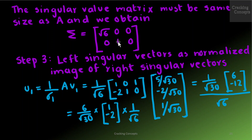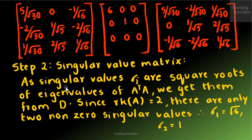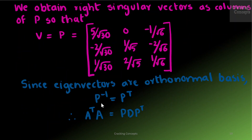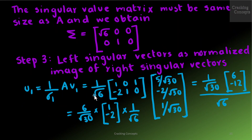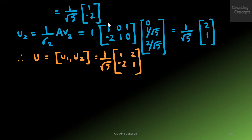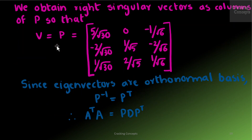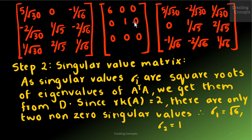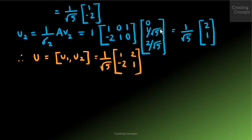In step 3 we find the left singular vectors as the normalized images of the right singular vectors. We compute Ui = A Vi / σi. So U1 = A V1 / σ1, where V1 is the first column of V. On substituting the values we get U1 = (1/√5)[1, −2]. Similarly U2 = A V2 / σ2, where V2 is the second column of V, giving the result (1/√5)[2, 1]. Therefore U = [U1, U2] = (1/√5) [[1, 2], [−2, 1]].